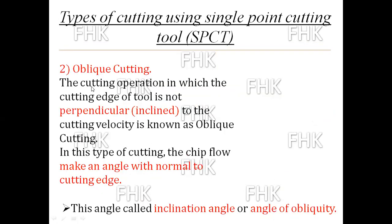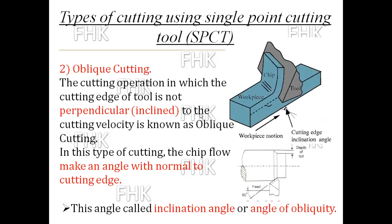Next is oblique cutting. The cutting operation in which the cutting edge of the tool is not perpendicular — it is inclined to the cutting velocity or direction of cutting — is known as oblique cutting. In this figure you can see that the cutting edge is inclined to the direction of motion of the tool or direction of motion of the workpiece. Due to that inclination, this type of cutting is called oblique cutting.